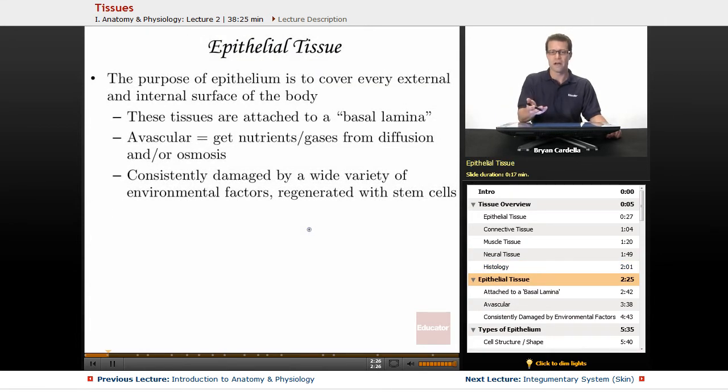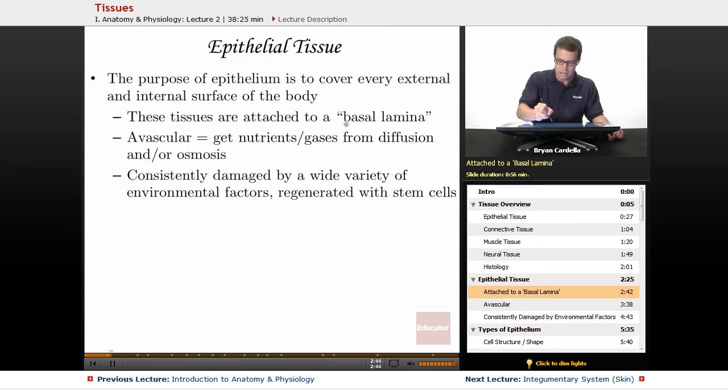The first kind of tissue we're going to talk about is epithelial tissue, also called epithelium. The purpose of epithelium is to cover every external and internal surface of the body, not just on the outside, but internal organs as well. These epithelial tissues are always attached to a basal lamina, also known as a basement membrane.